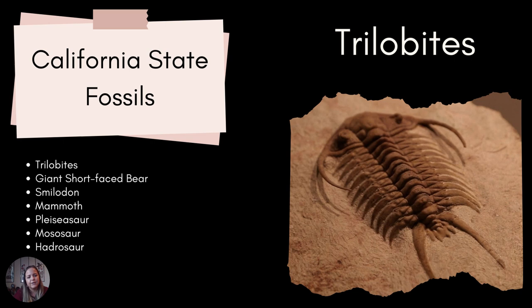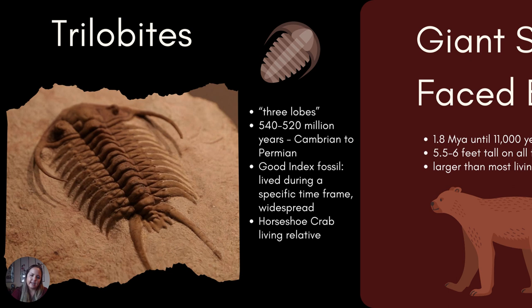The last thing here is we're going to go through some of California's state fossils: the trilobite, the giant short-faced bear, the Smilodon, the mammoth, the plesiosaur, the mosasaur, and the hadrosaur. These are not all of the fossils ever found in California, but these are some of the big hitters.